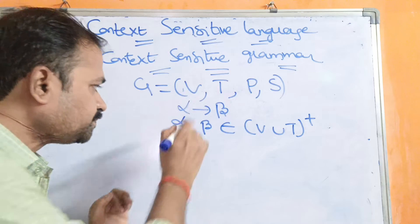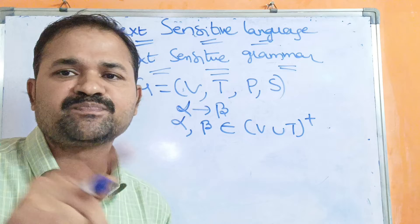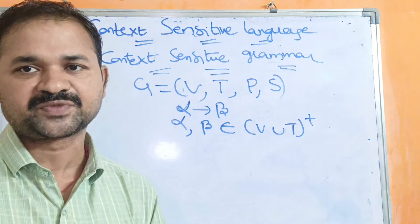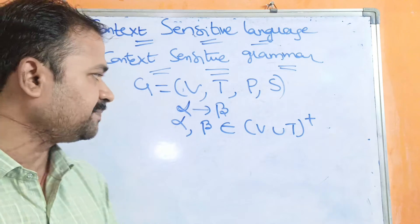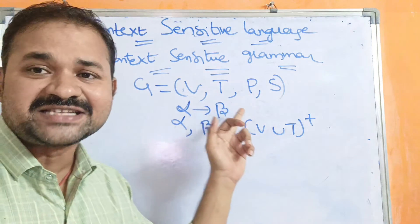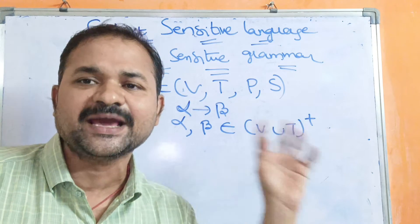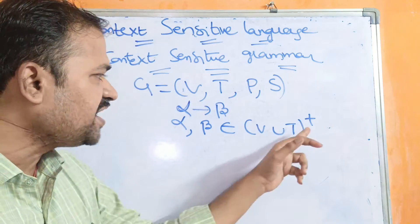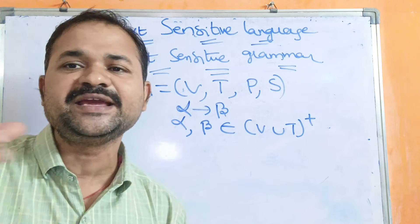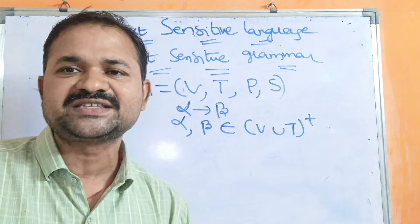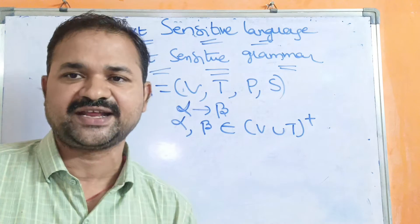Alpha means left hand side production. Left hand side should contain minimum one non-terminal. And right hand side should not contain epsilon. That's why here we have written plus — star means any number of occurrences including zero, while plus means minimum one occurrence.